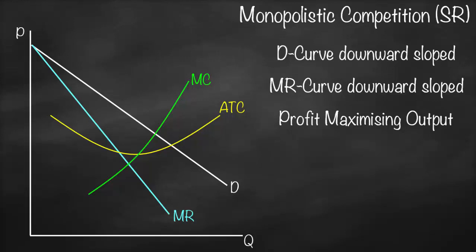The profit-maximizing condition applies to all market structures — perfect competition, monopolistic competition, oligopoly, and monopoly — and is where marginal revenue equals marginal cost. The marginal revenue curve is the blue line and the marginal cost is the green line. The point of intersection gives us our profit-maximizing output, Q*.